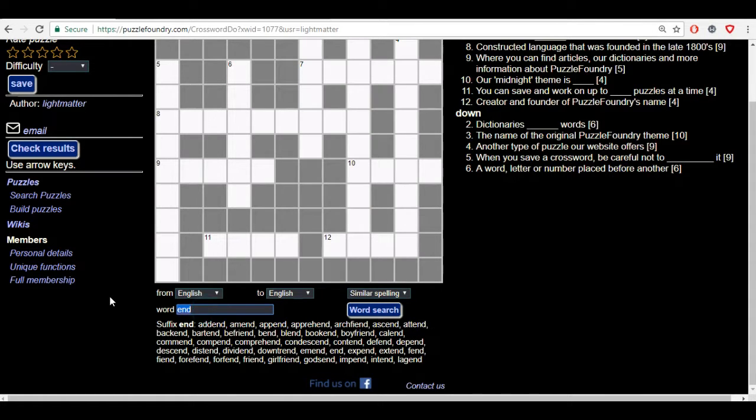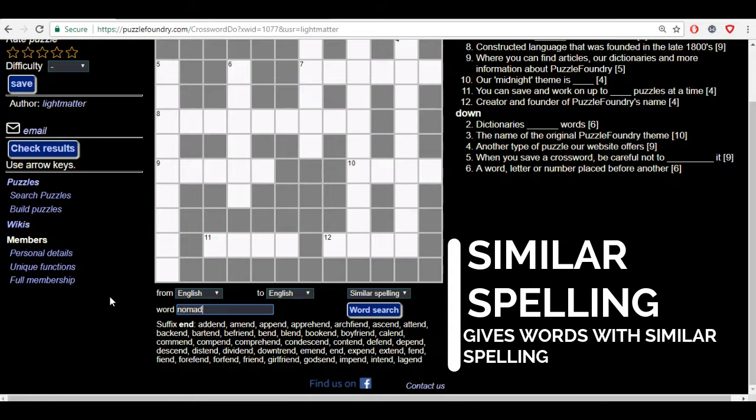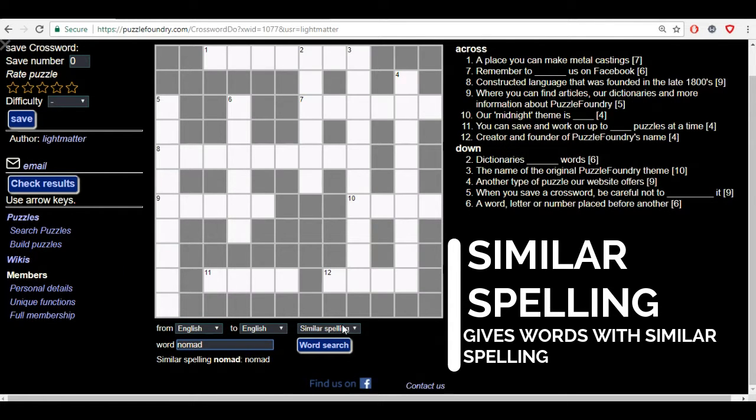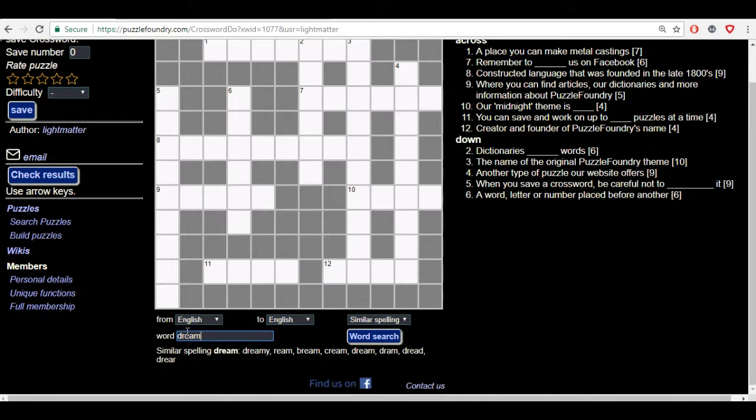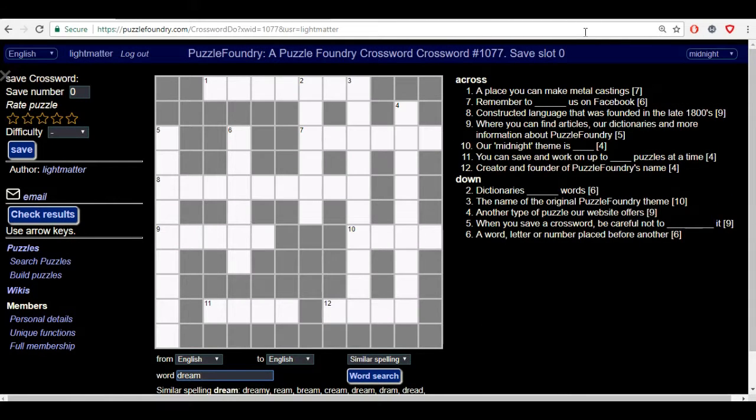And lastly we have our similar spelling, which gives us words that are similarly spelled to the word that you search for. So we will be using dream again here. So words like dream, ream, bream, cream, dream, dram, dread or drear are words of similar spelling to dream. And that's the unique functions of the crosswords.